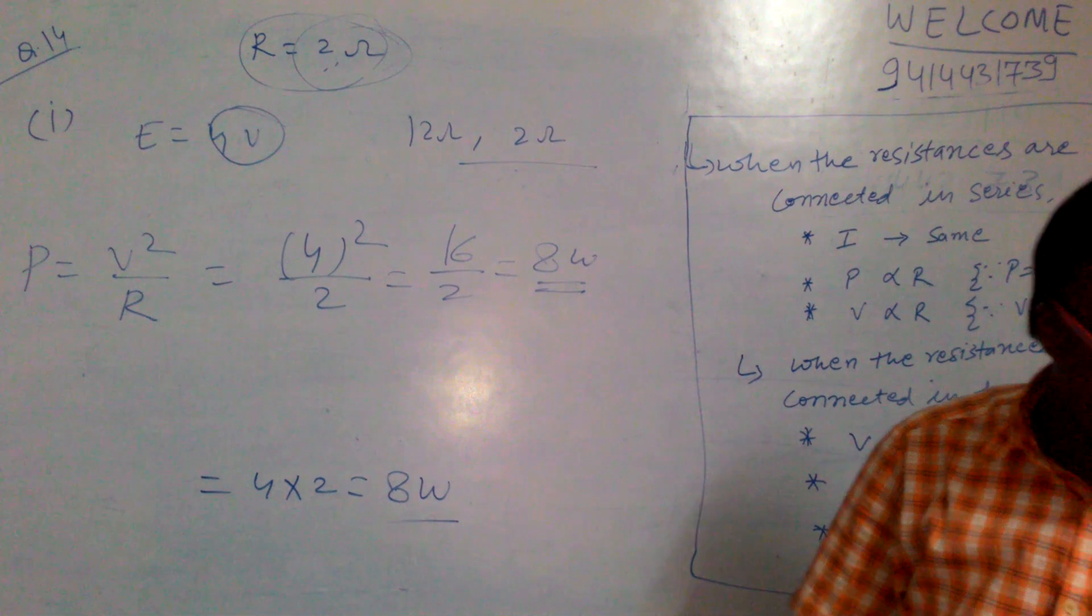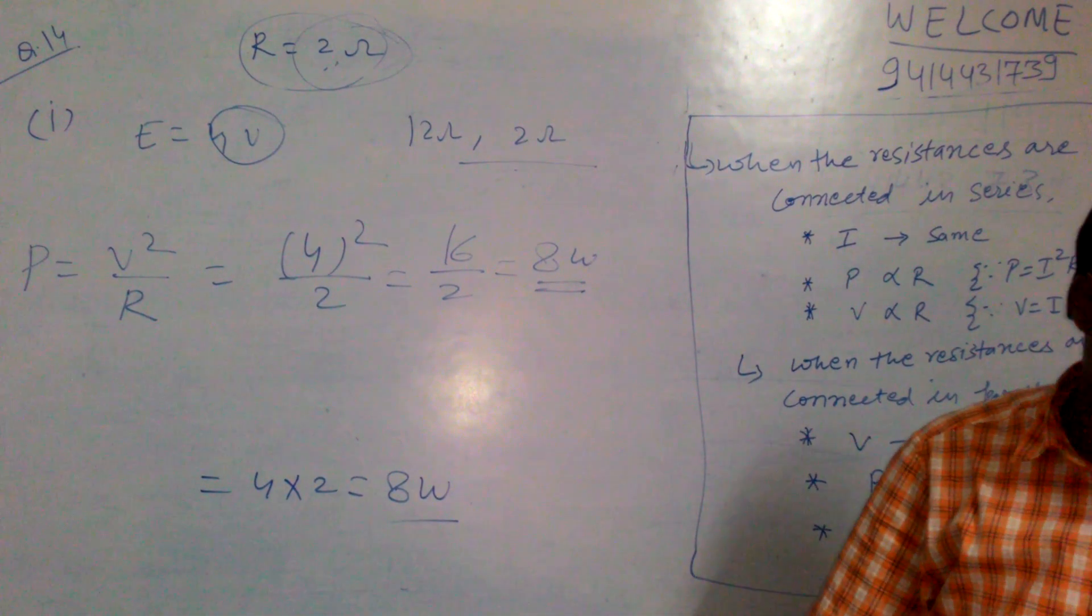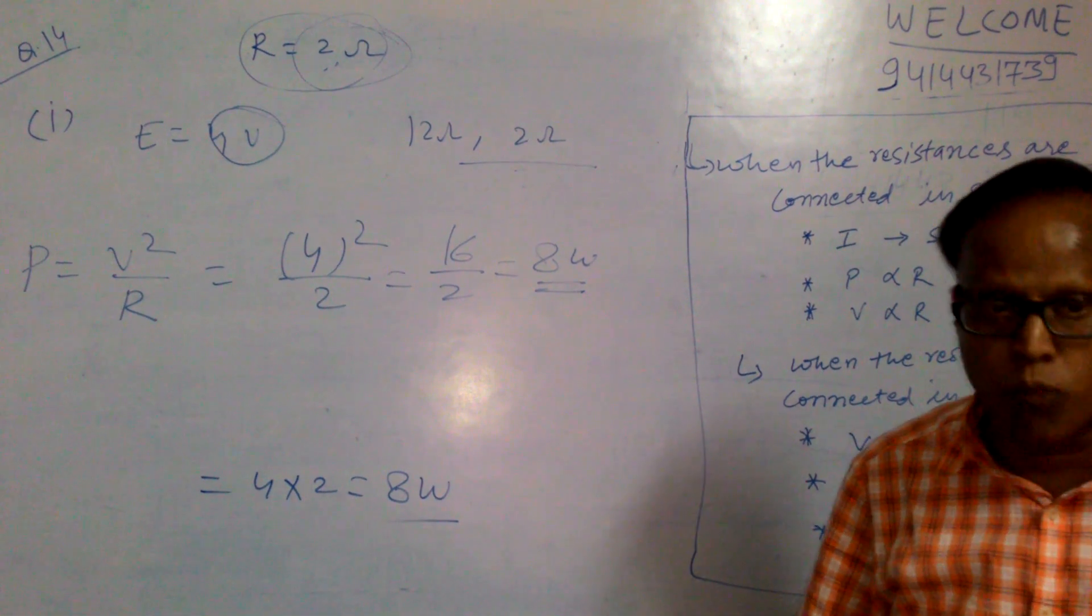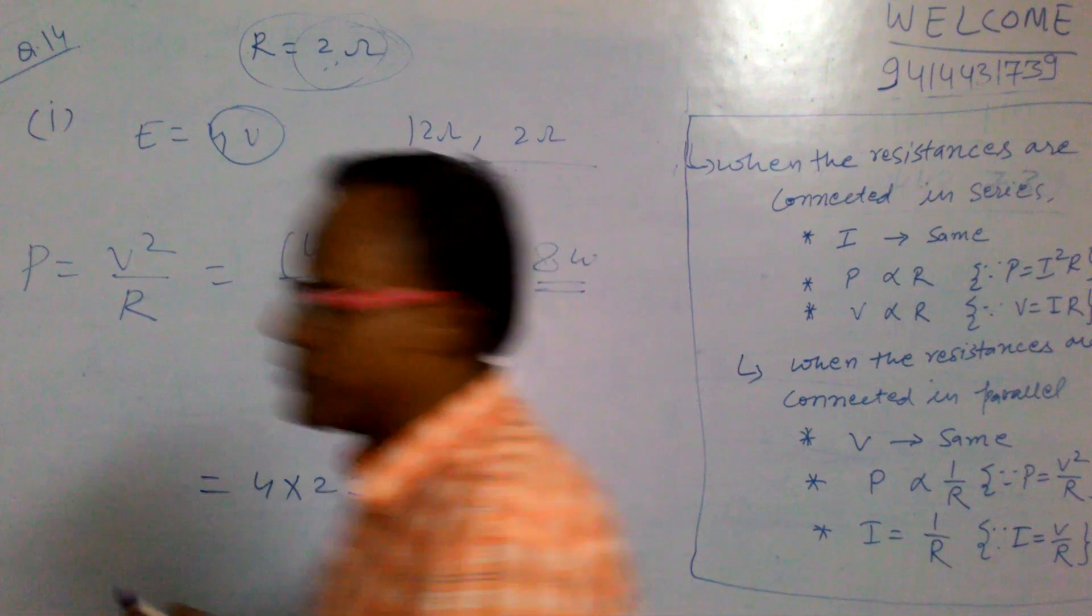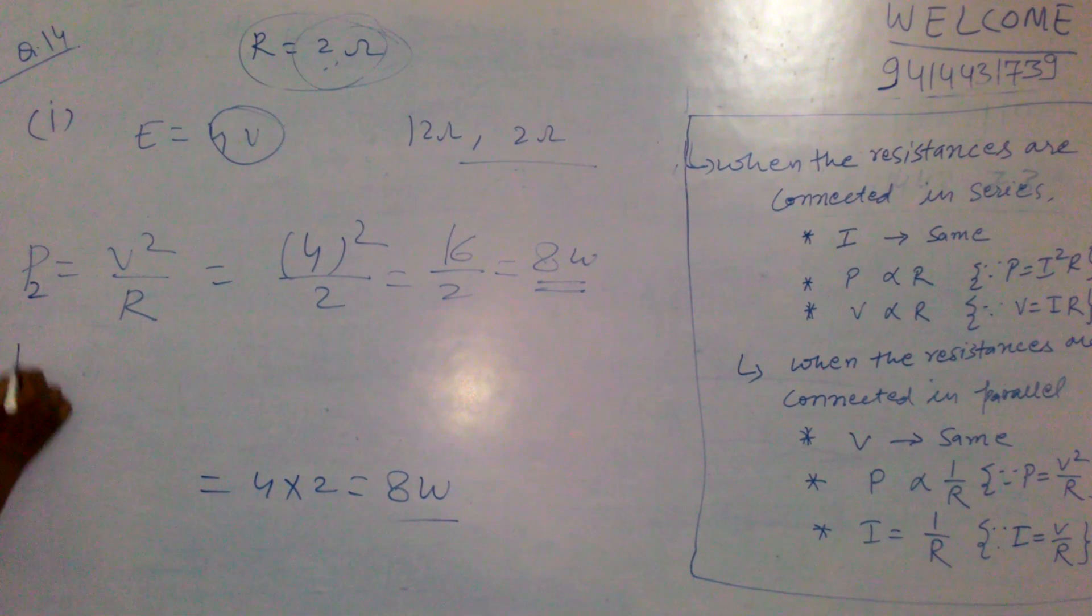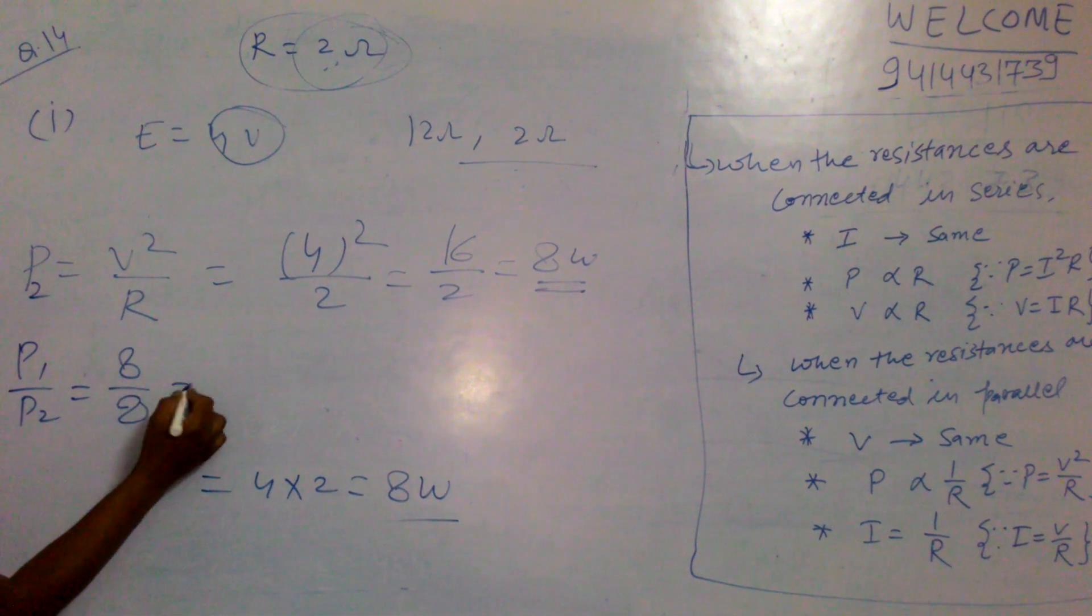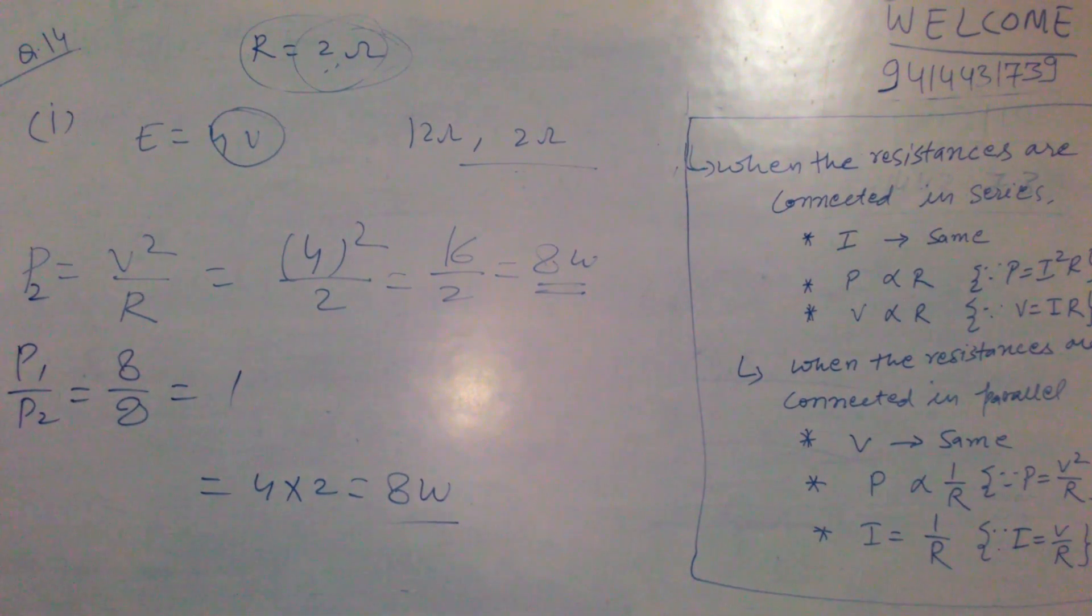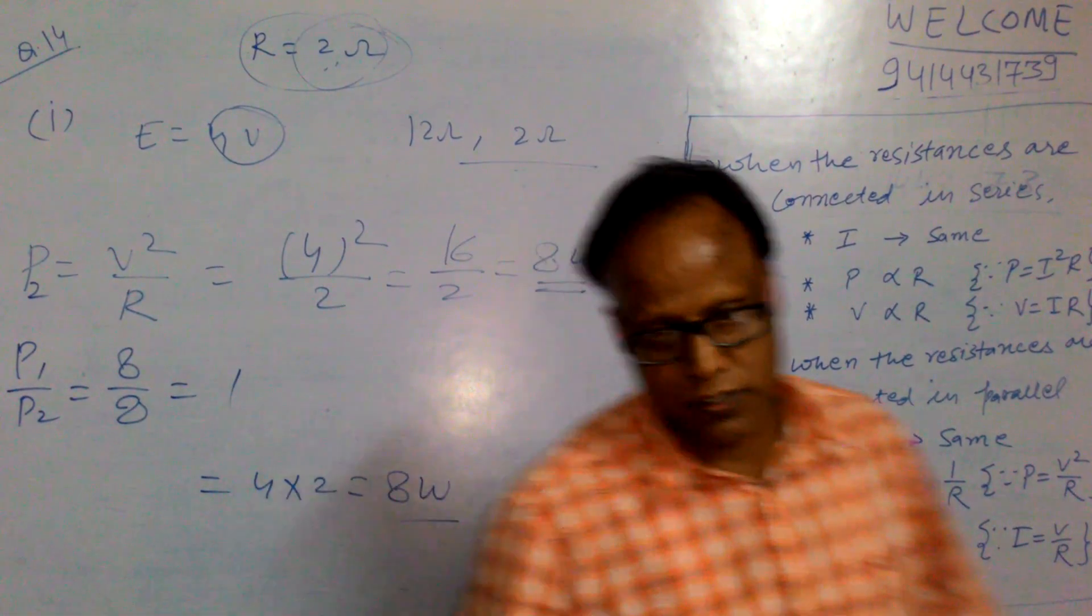We can say finally, our aim is to compare the power. Your question is compare the power using 2 ohm resistor in the following cases. So previous one is P1, and this is P2. Then ratio of these two powers P1 upon P2 is 8 upon 8. It comes out 1. So same. Thank you.